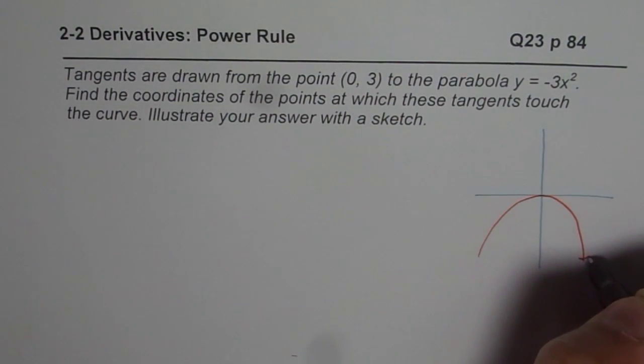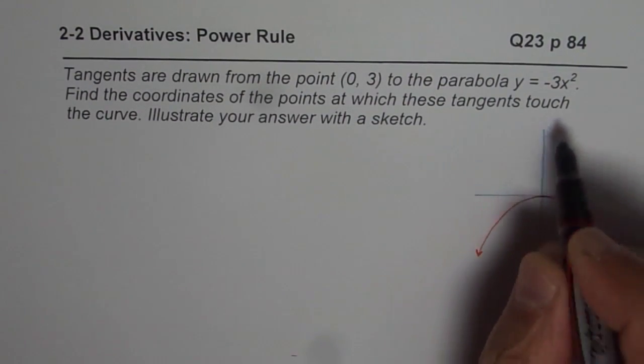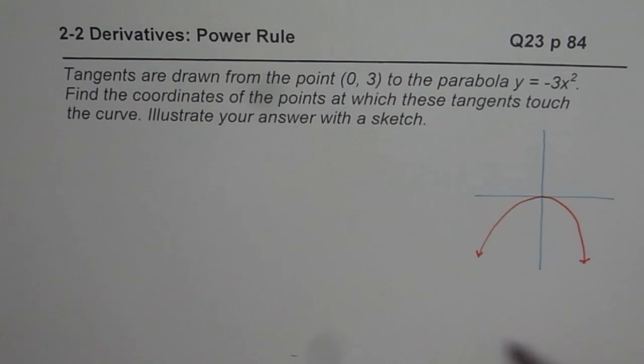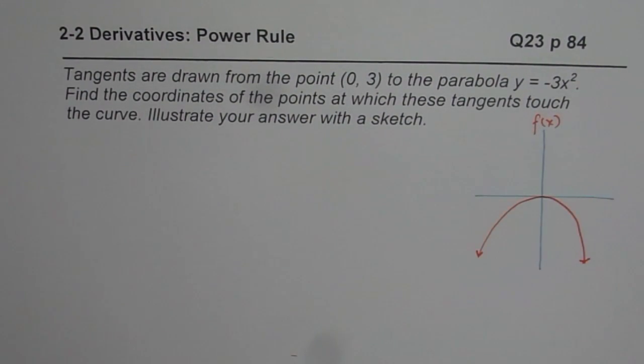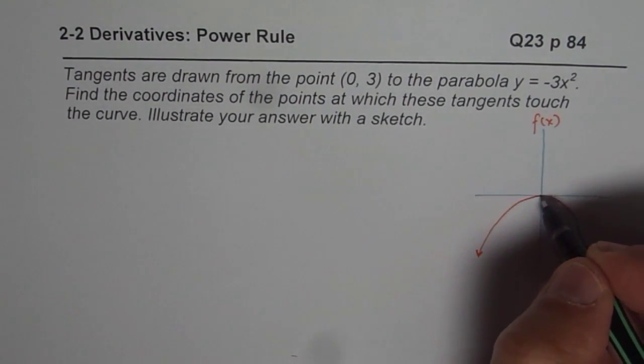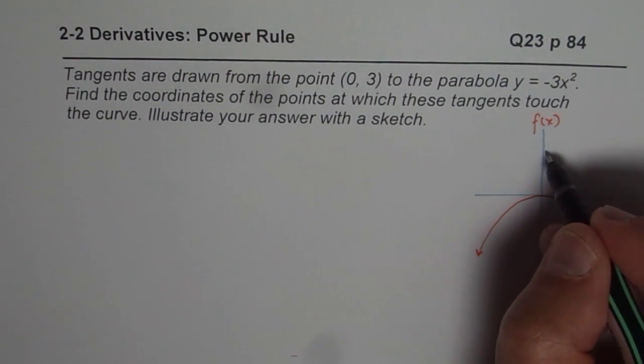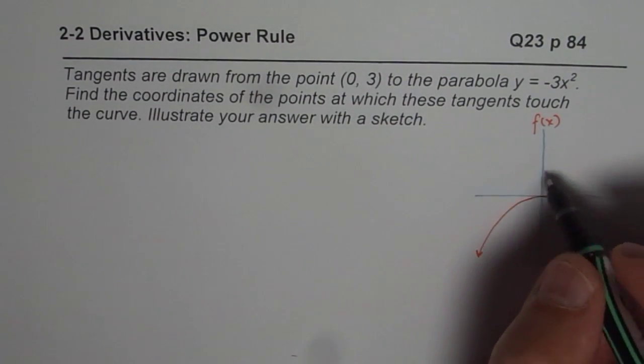This is the parabola which is -3x². I'm saying that is my function f(x). What we need to do is draw tangents from the point (0, 3). Now (0, 3) is somewhere here, and it is not on the parabola.